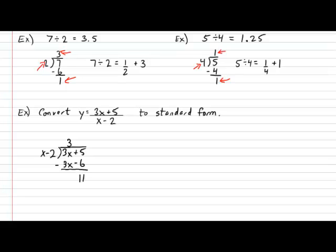And therefore, our final result in standard form is, in fact, simply just y equals 11 over x minus 2 plus 3. With the 11 coming from the remainder, the x minus 2 coming from the divisor, and the plus 3 coming from the result up top over here.